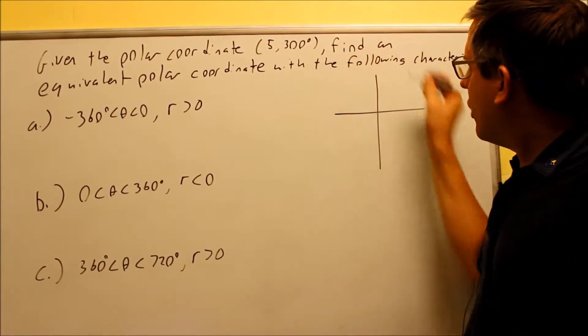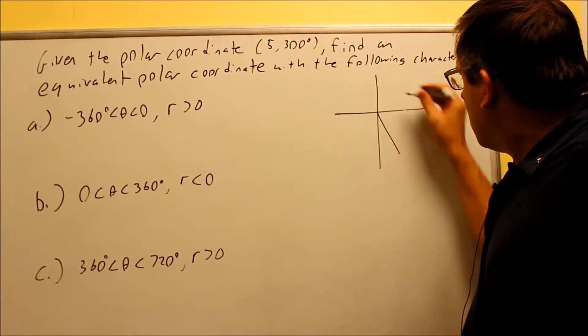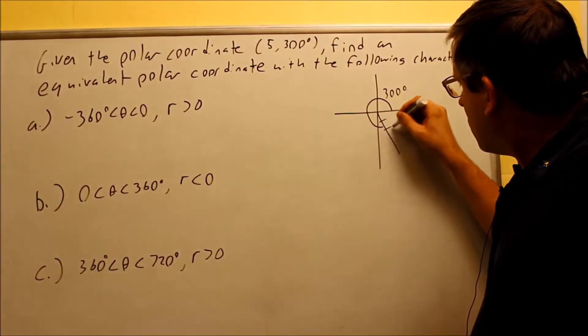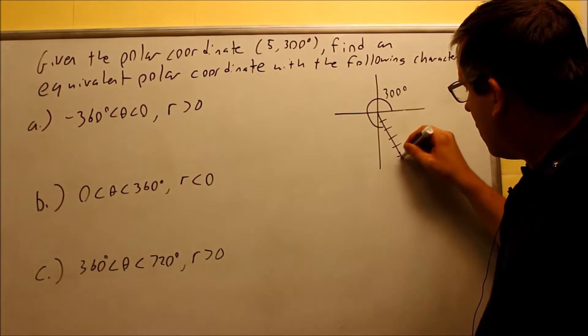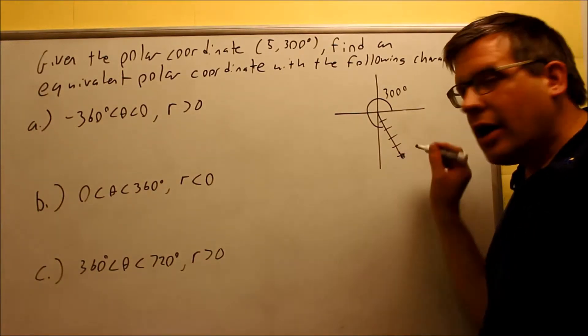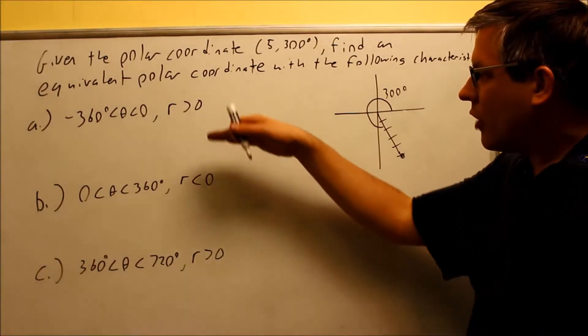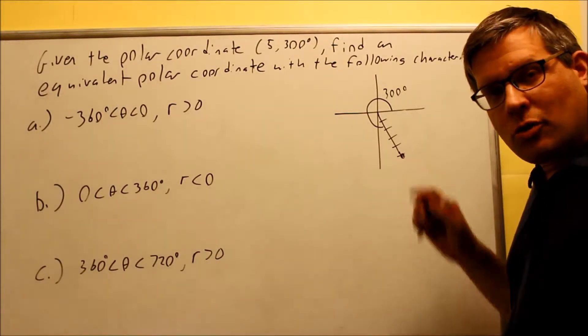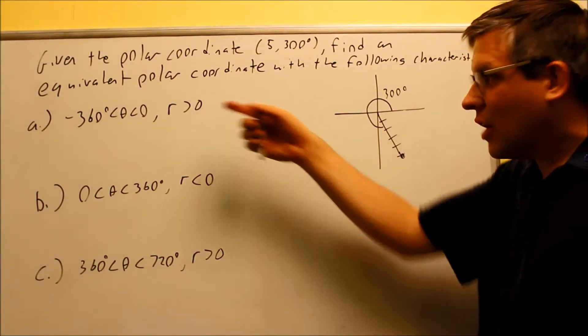So let's do that on here. 300 degrees is going to be this one here. So we go around here 300 degrees. We count 5 down, and it puts us in the fourth quadrant. So every one of our answers here should take us back to the original point that we had before. So let's do that for each of these.